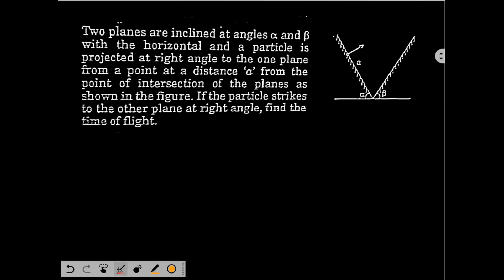See this question now again based on projectile motion. Two planes are inclined at angles alpha and beta with the horizontal and a particle is projected at right angle to the one plane from a point at a distance a from the point of intersection of the planes as shown in the figure.